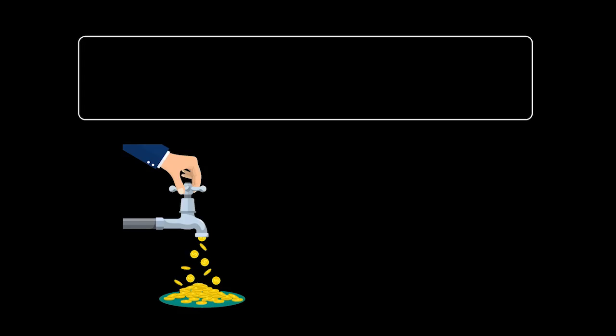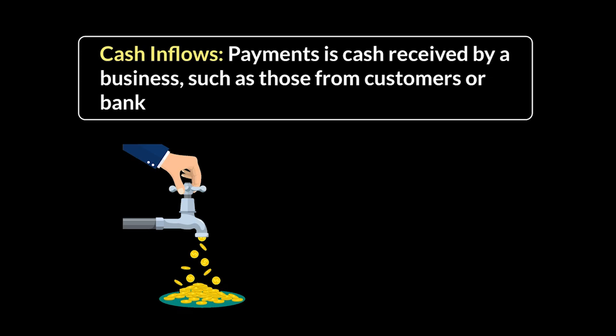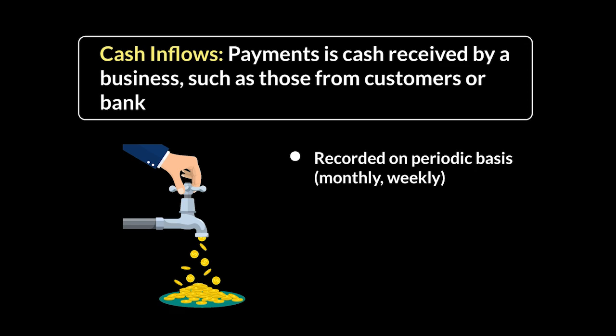Let's take a little look at what cash inflows really are. Cash inflow is simply all the cash received by a business over a certain period. This will come from customers when they buy things, or it will come from the bank in the form of a bank overdraft or any other source of finance. So anytime cash is received, it's recorded as a cash inflow. All cash flow forecasts and cash inflows are recorded periodically — monthly or weekly.